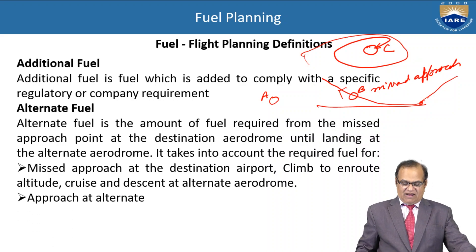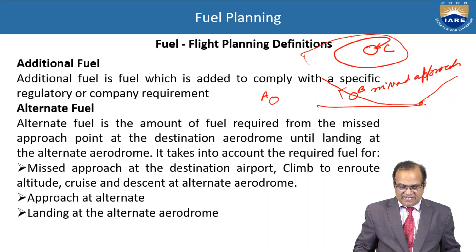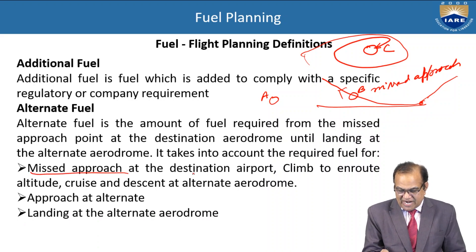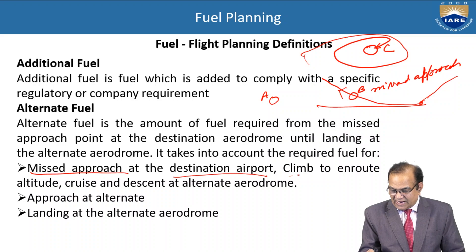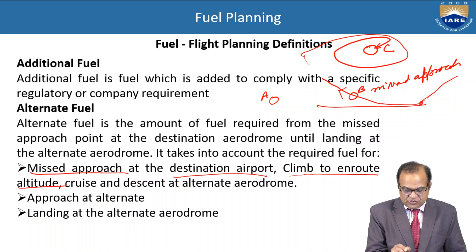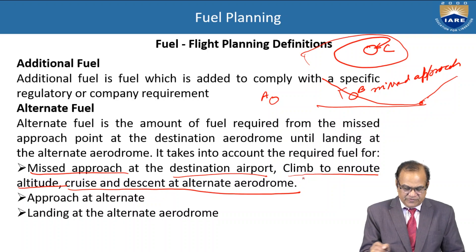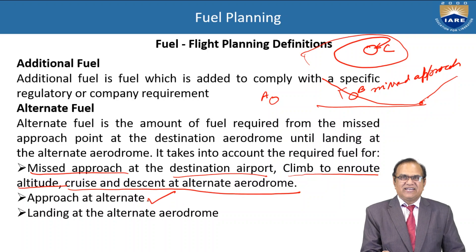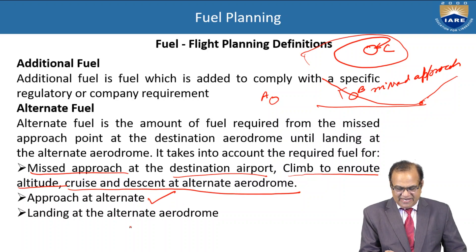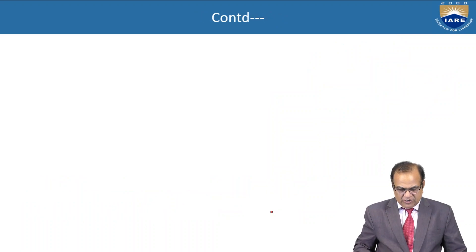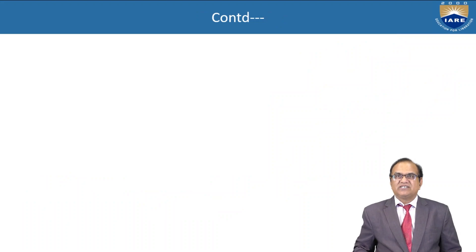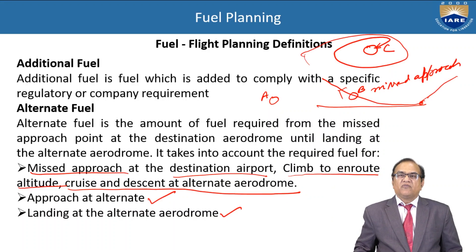The alternate fuel accounts for: missed approach at the destination airport, climb to en-route altitude, cruise and descent to alternate aerodrome, approach at the alternate aerodrome, and landing at the alternate. These are the things which are to be considered for fuel planning under alternate fuel.